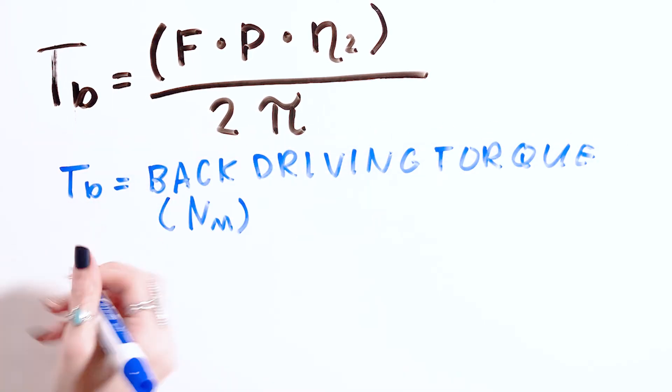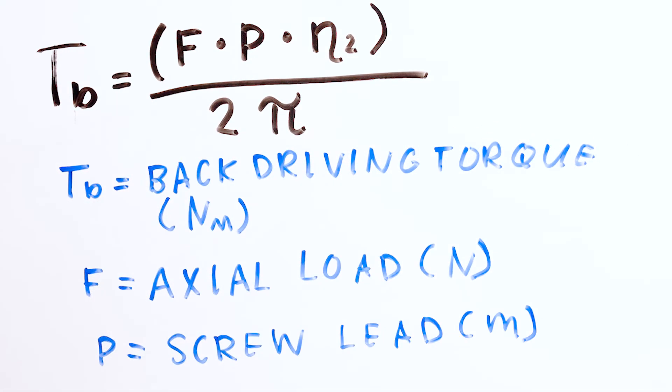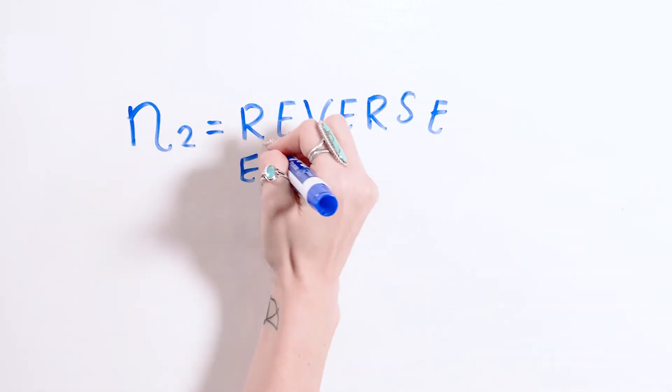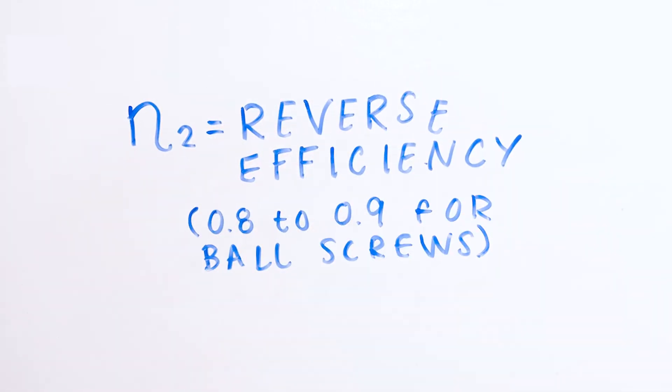It's relatively easy to determine if a ball screw or lead screw will backdrive. First, you calculate the backdriving torque caused by the load. This is based on the axial load, remembering to include the effects of gravity, the lead of the screw, and the efficiency of the screw assembly when operating in reverse. And keep in mind that the screw's reverse efficiency is typically lower than its efficiency in normal operation.